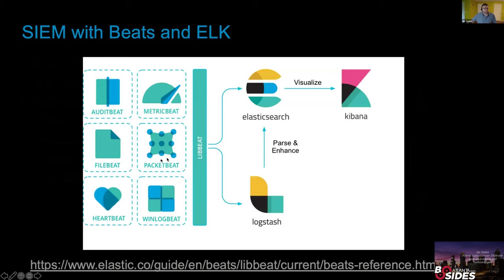Here's how the Elastic Stack looks. Log carriers — Beats — collect data for Windows, Linux, network, and more. You can send data directly to Elasticsearch as raw data or through Logstash first for enrichment and parsing. Everything ends up at Elasticsearch for search and reporting, and you can access the data via Kibana for visualization.